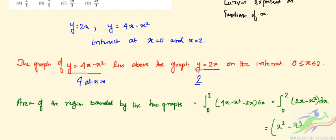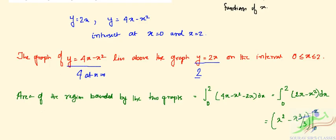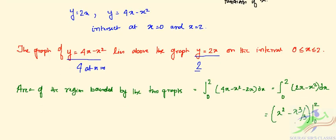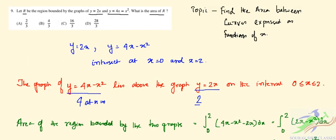Evaluating: [x² − x³/3] from 0 to 2 gives 4 − 8/3 = 4/3. So the area bounded by the two curves is 4/3. The correct option is B.